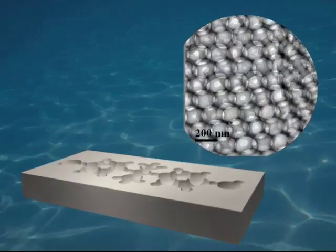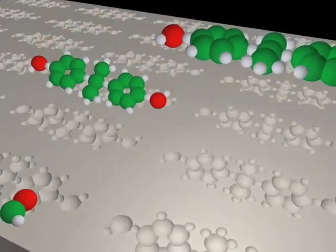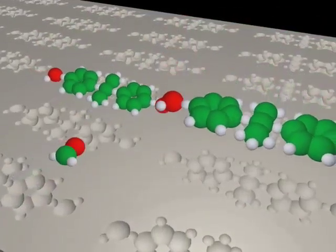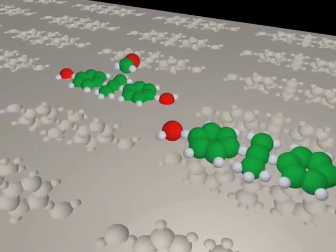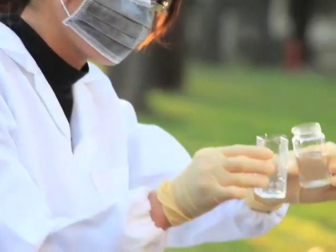The molecular imprinted material offers highly accurate identification and is not easily interfered with by other matrices. It can be applied in detecting BPA.